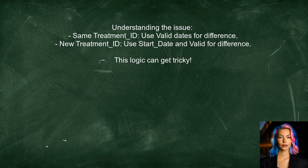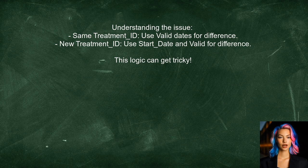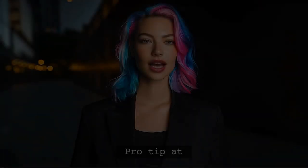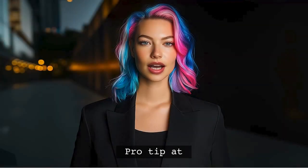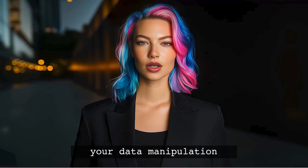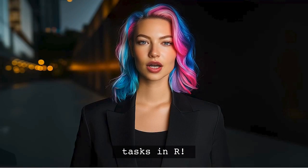To understand the issue, we need to recognize that when treatment IDs are the same, we calculate the difference using the valid dates. However, when a new treatment appears, we switch to using the start dates. This logic can get tricky, especially at the end of the data frame. Stay tuned — at the end of this video, I will share a pro tip that will simplify your data manipulation tasks in R.